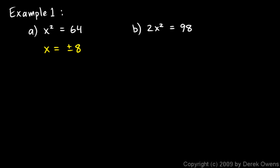This next one: 2x squared equals 98. We divide both sides by two — the twos cancel — and we're left with x squared equals 98 over 2, which is 49. So x is now isolated, and taking the square root of each side gives x equals plus or minus 7.